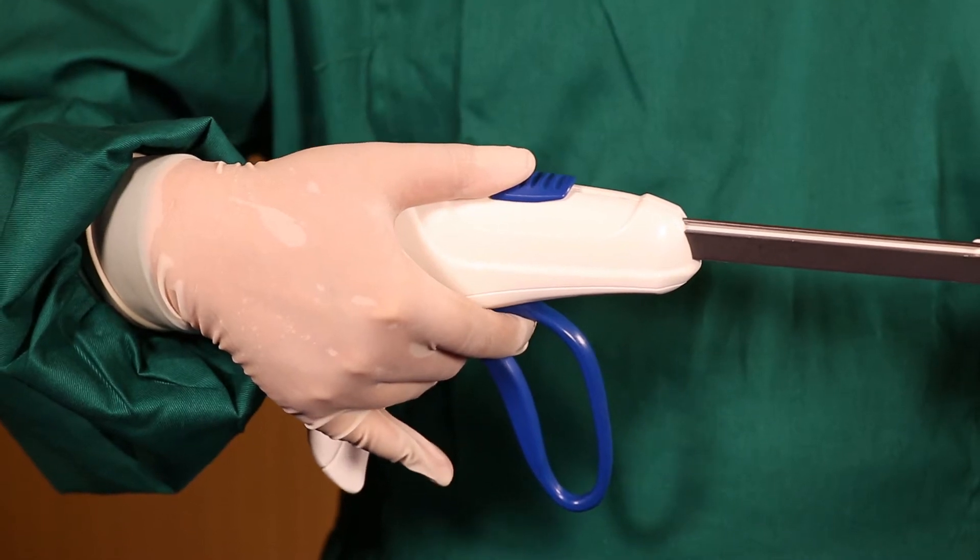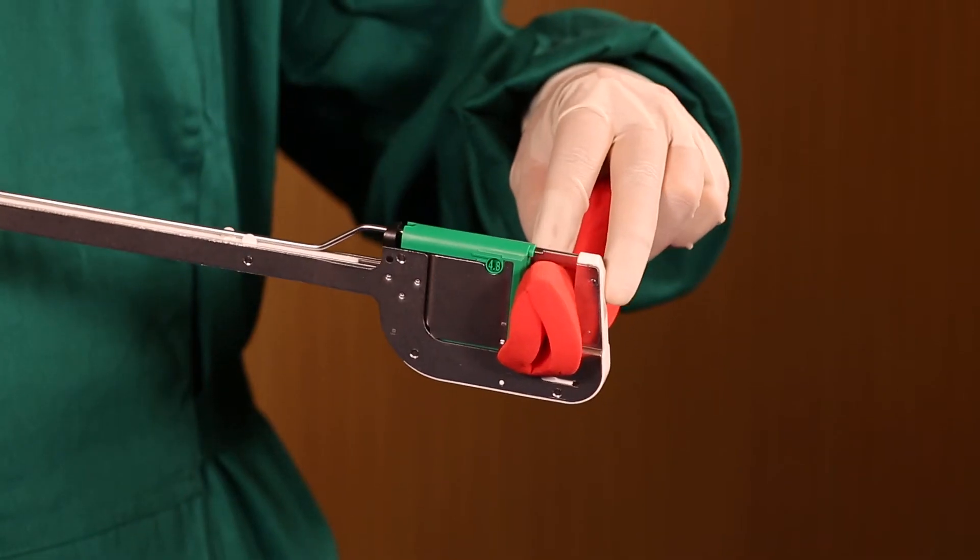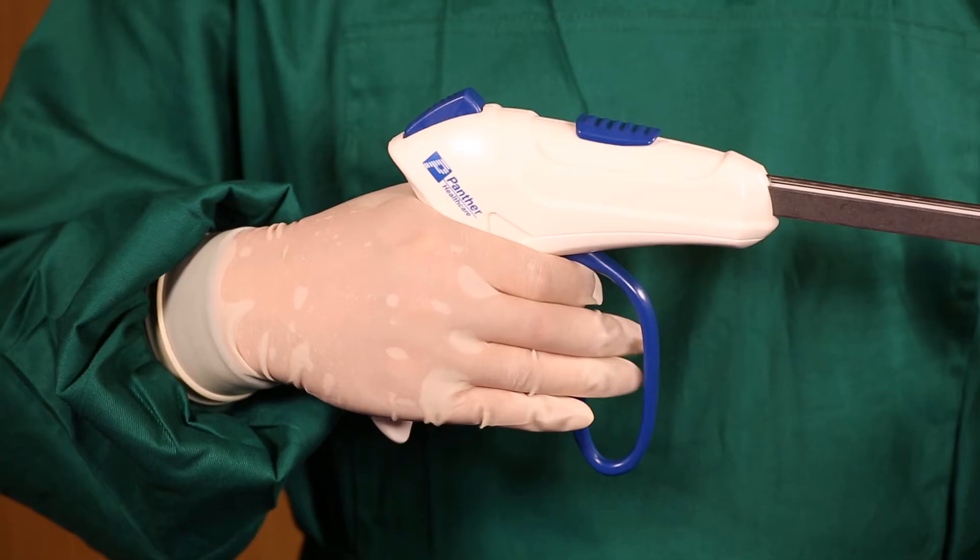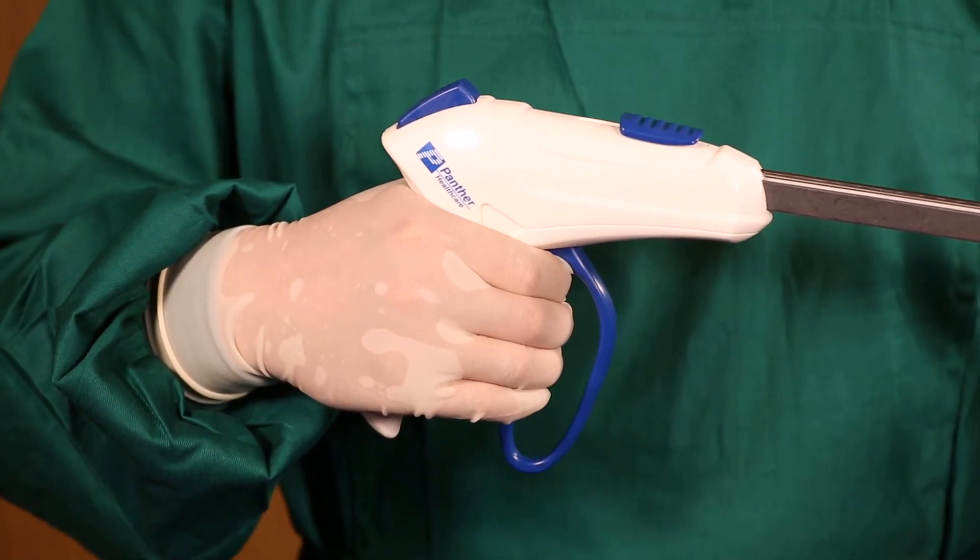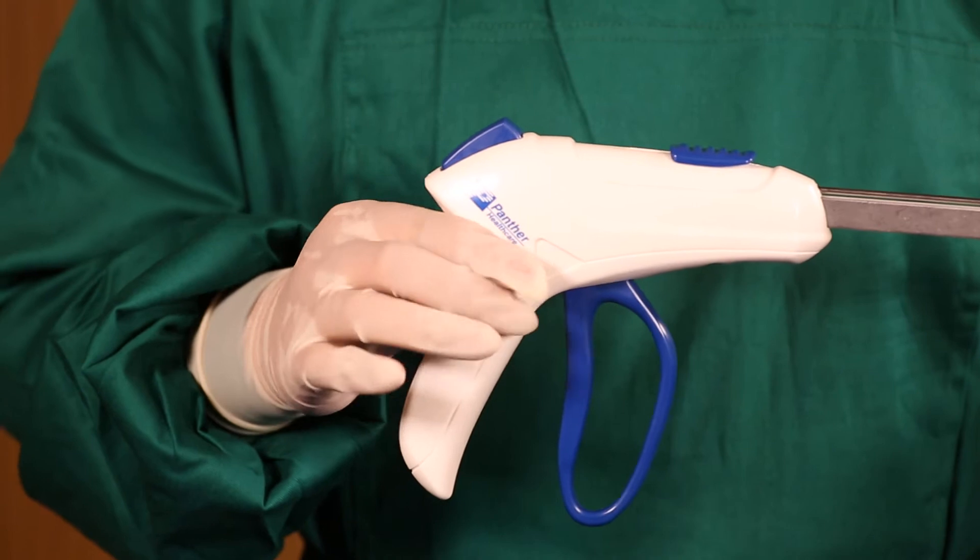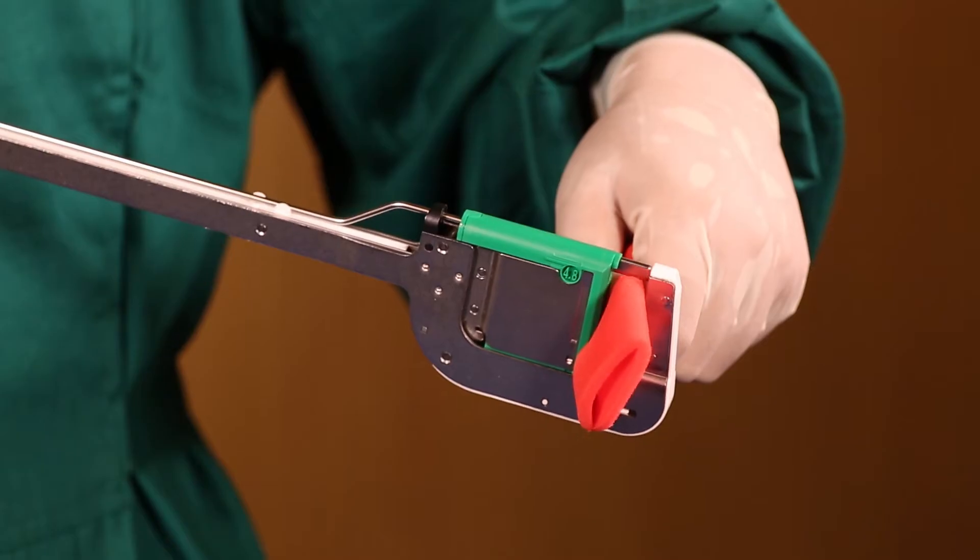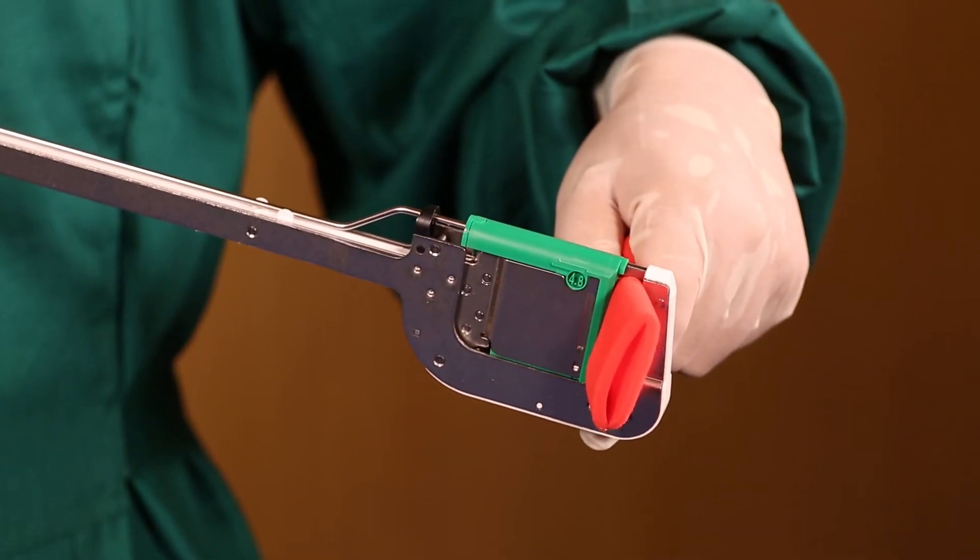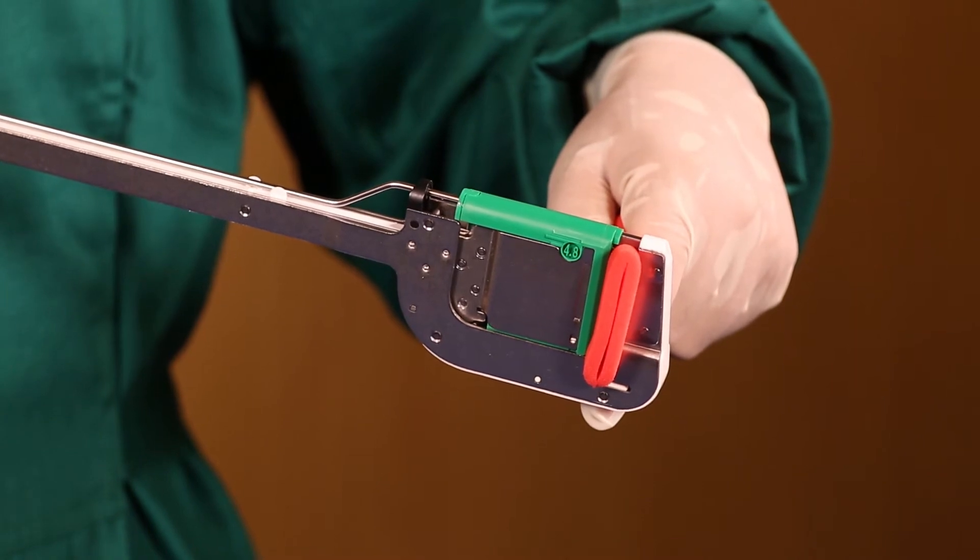The retaining pin can be pushed manually or automatically. Squeeze the firing handle halfway. The firing handle will get locked with jaws half closed. In this position, the doctor can adjust the tissue without unnecessary trauma.